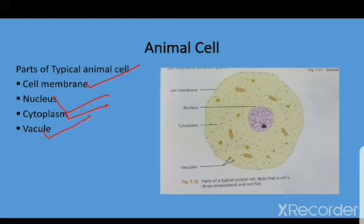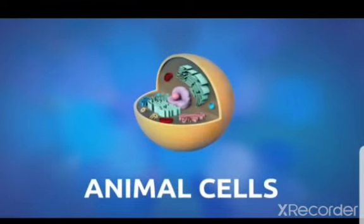Vacuole are tiny spaces in the animal cell which contain food, water, waste material, and other substances. The vacuoles are usually very small and numerous in animal cells.